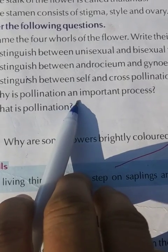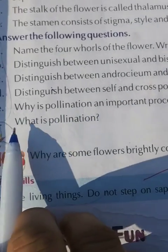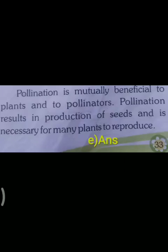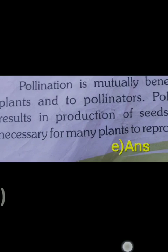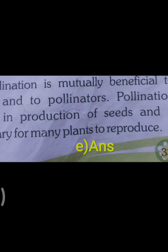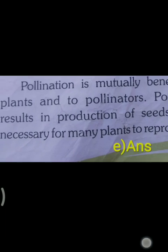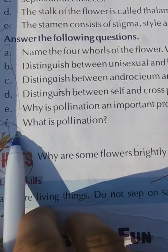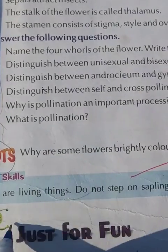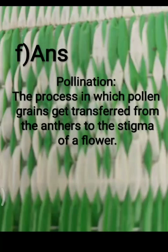E: why is pollination an important process? Fifth answer: pollination is mutually beneficial to the plant and to the pollinators. Pollination results in production of seeds and is necessary for many plants to reproduce. F: what is pollination? Pollination is the process in which pollen grains get transferred from the anther to the stigma of a flower.